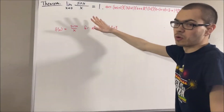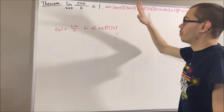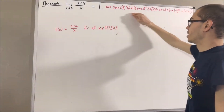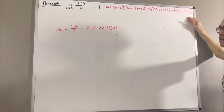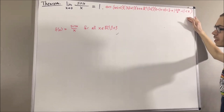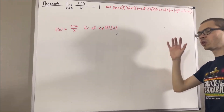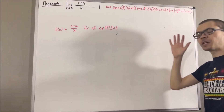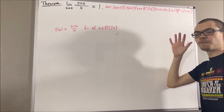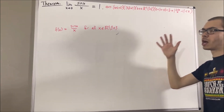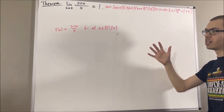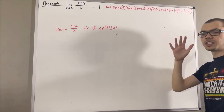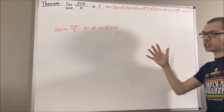In proving this theorem, we are going to appeal directly to the definition of a limit. We are also going to use a function which we have proven many properties about: the arctangent function.